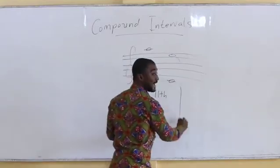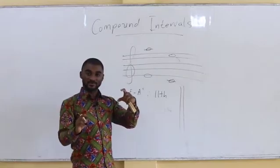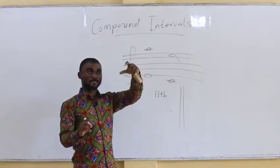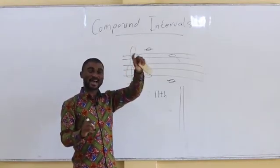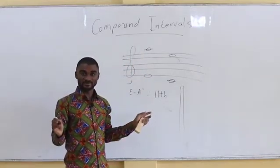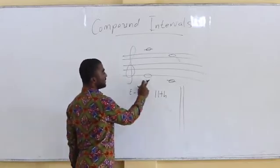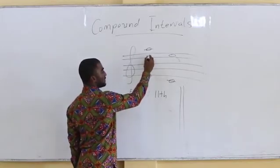This is the other way: outline the octave, count the spare or the added interval beyond that octave, and name it as a compound interval by addition of the word compound. That's what it is. It means if from E, this is the octave E.